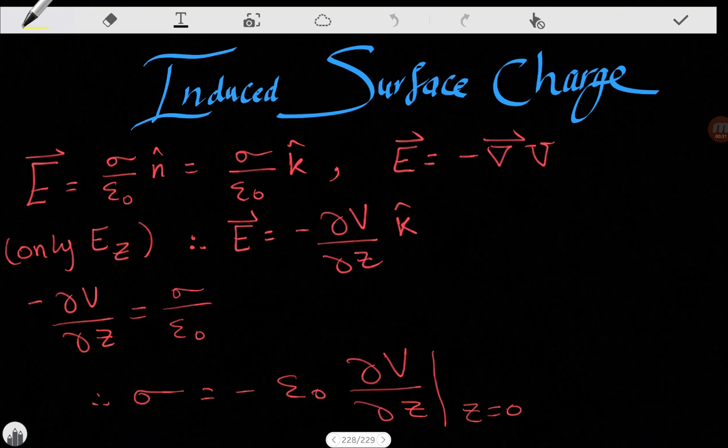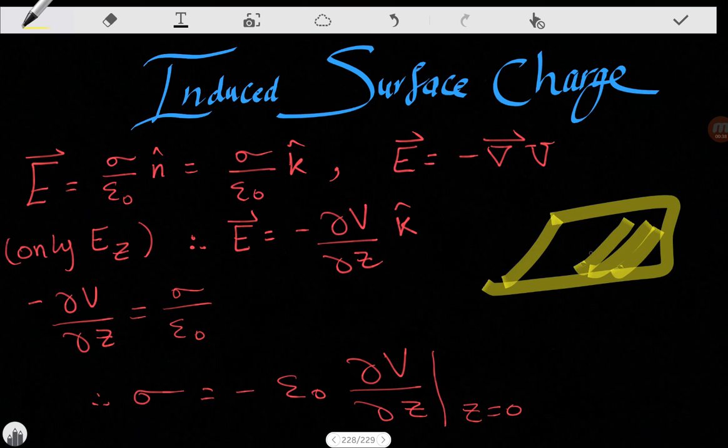We know that the electric field just above the conductor is equal to sigma over epsilon naught n hat. And in our condition, we had the plate like this, so the perpendicular component unit vector is going to be n hat, and n hat is k hat.